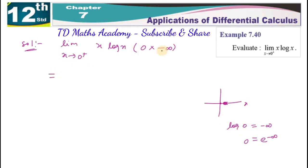So if we get indeterminate form, we will try to change the function. That is, limit x tends to 0 plus, log x. Say x is 1 by x in denominator. We will apply the L'Hôpital rule.